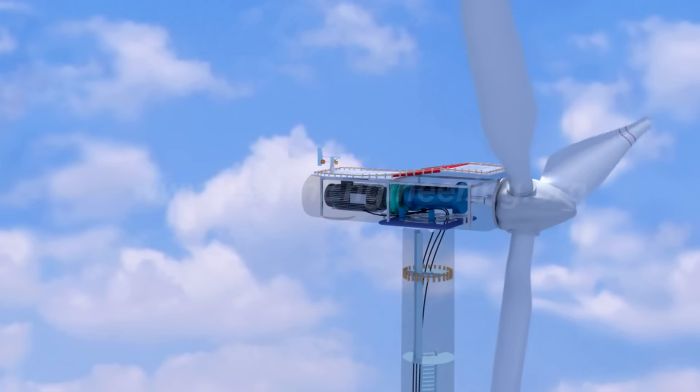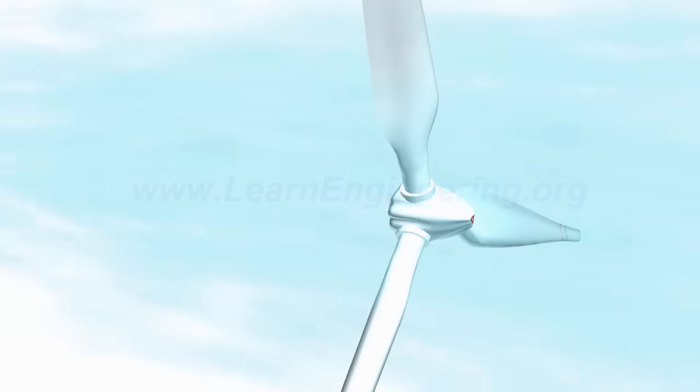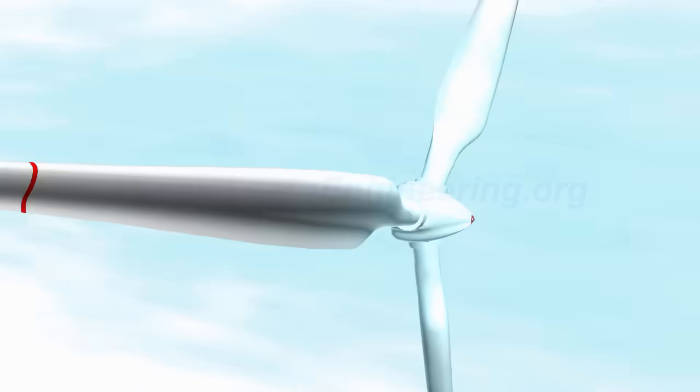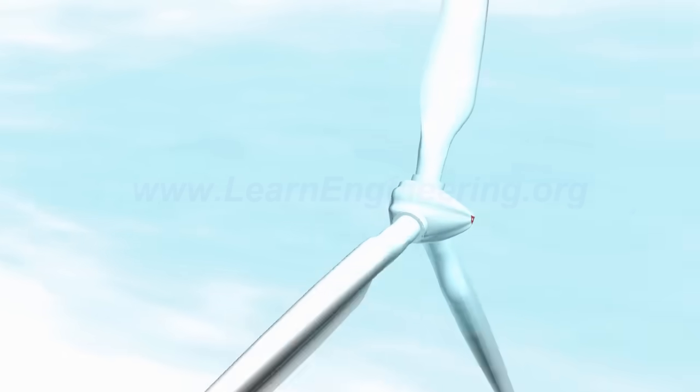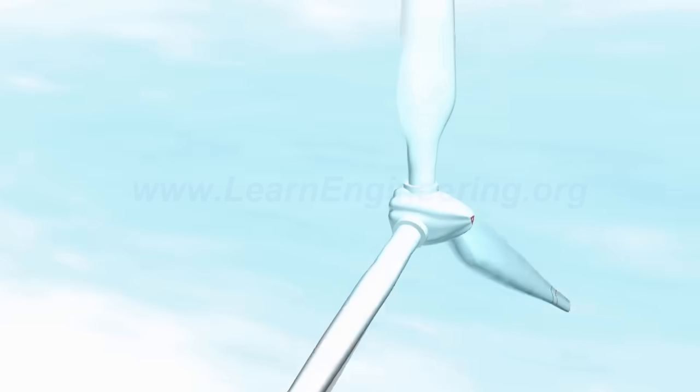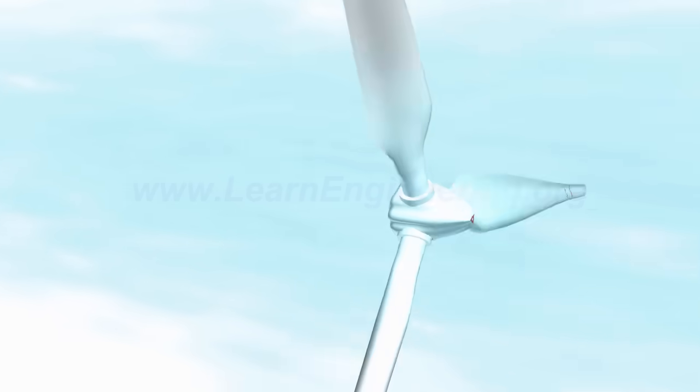First let's get into its basic working. If the blowing wind can turn the wing we will receive electricity from the generator that is attached to it. However, how does the blowing wind turn the wing?